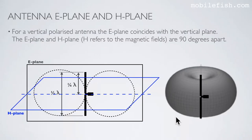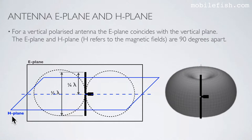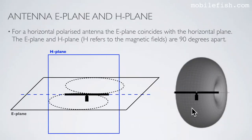For a vertical polarized antenna, the E-plane coincides with the vertical plane. The E and H planes are 90 degrees apart. H refers to the magnetic fields. For a horizontal polarized antenna, the E-plane coincides with the horizontal plane, and the E and H planes are again 90 degrees apart.